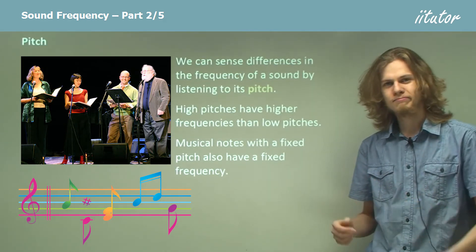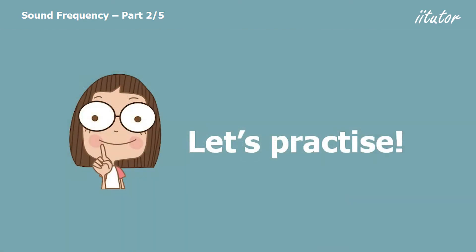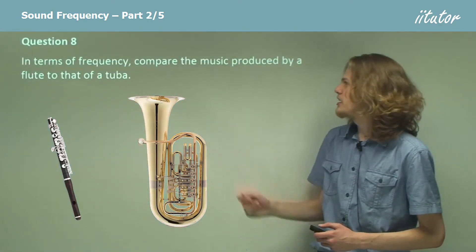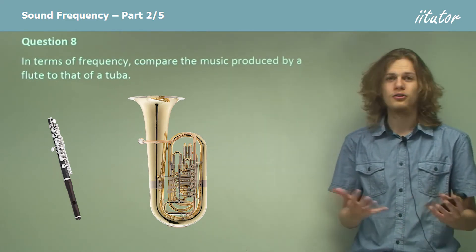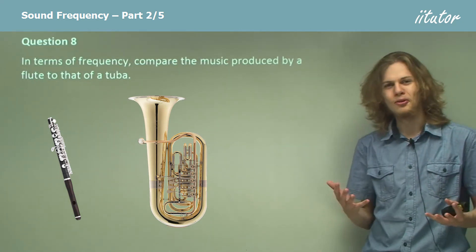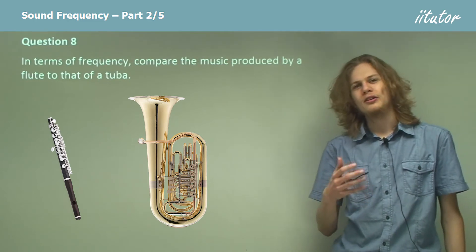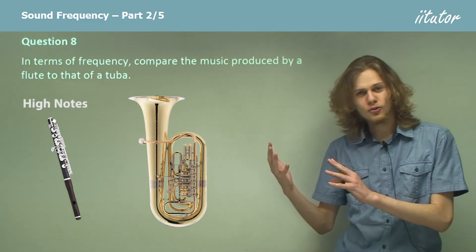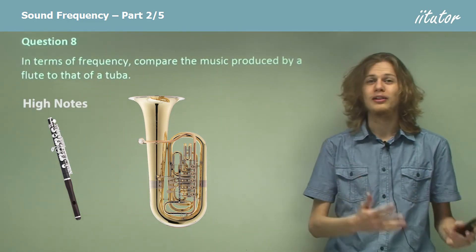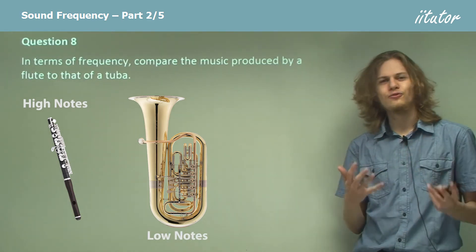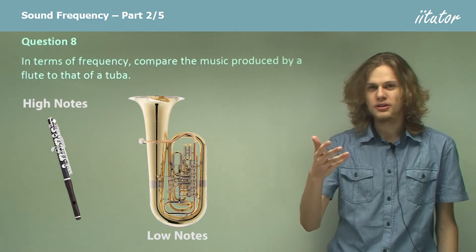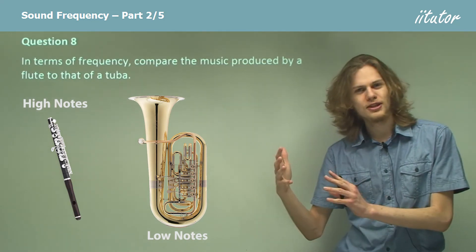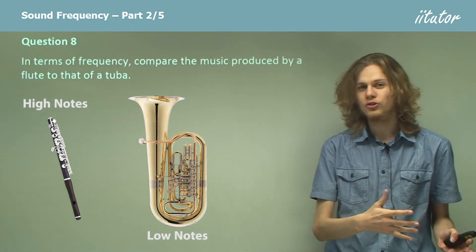Compare the music produced by a flute to that produced by a tuba. Flutes tend to use quite high notes, whereas tubas produce very low notes. Very high notes and high pitches mean high frequency, while very low notes and low pitches mean very low frequency.